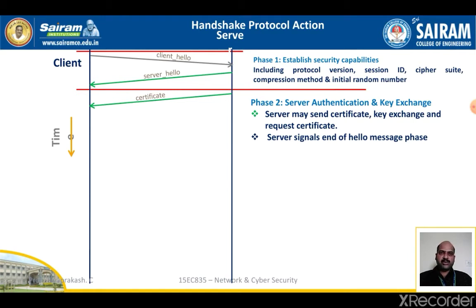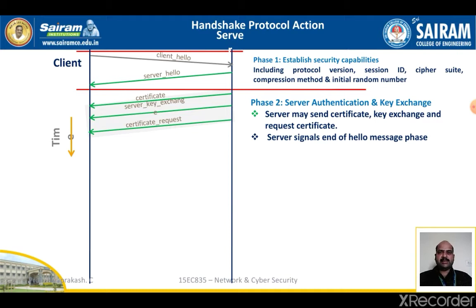A server not using anonymous Diffie-Hellman can request a certificate from the client. The certificate type includes the public key algorithm — RSA signature only, DSS signature only, RSA for fixed Diffie-Hellman, DSS for fixed Diffie-Hellman, RSA for ephemeral Diffie-Hellman, or DSS for ephemeral Diffie-Hellman.